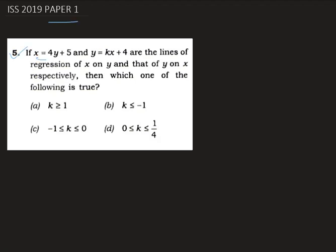In this question we are given two regression lines: x equals 4y plus 5 and y equals kx plus 4. These are the regression lines which denote x on y regression and y on x regression, respectively.